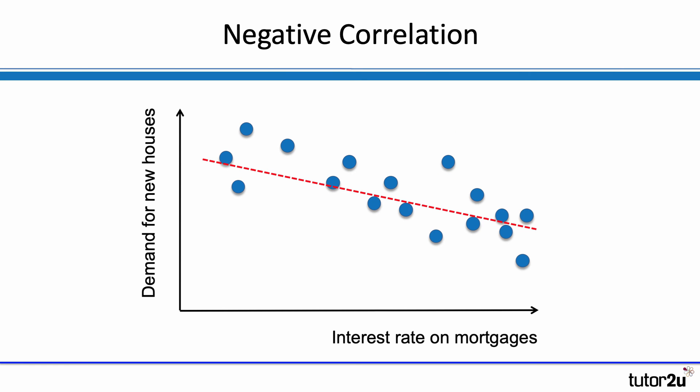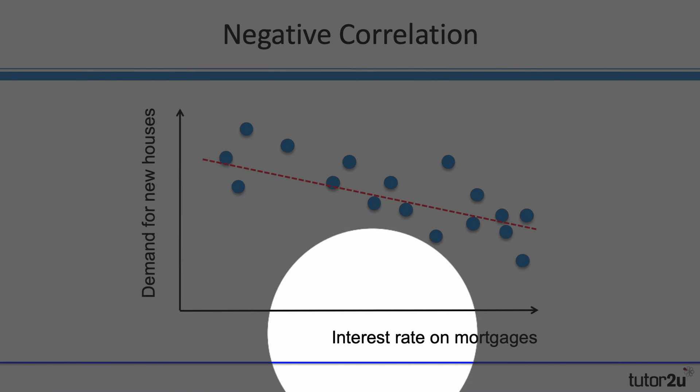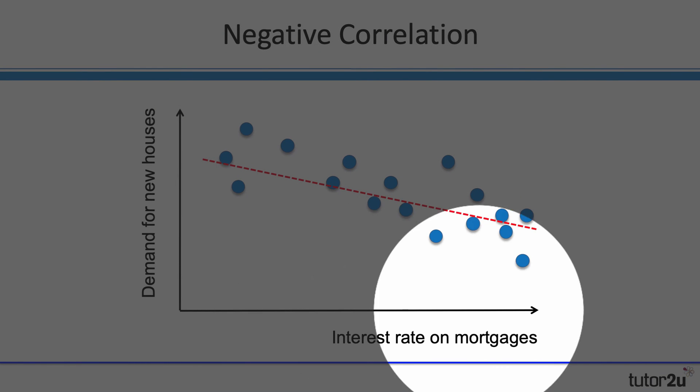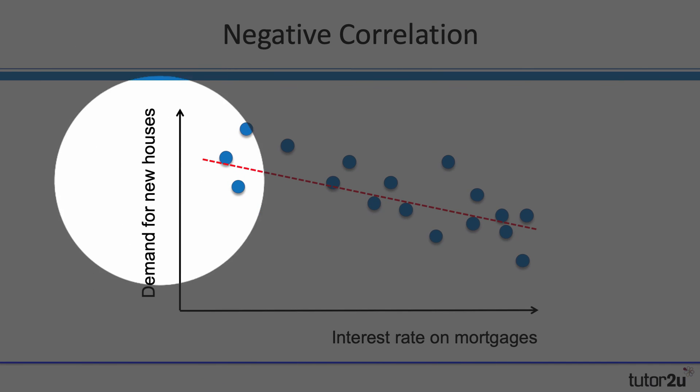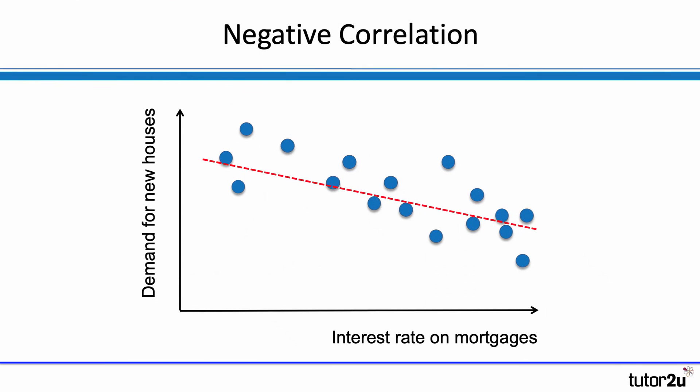Here's an example of a negative correlation. In this case, our independent variable on the x-axis is the interest rate paid on your mortgage, and the dependent variable is the demand for new houses. The data points suggest that as interest rates fall, demand for new houses increases — or vice versa, demand falls as interest rates go up. Negative correlation.